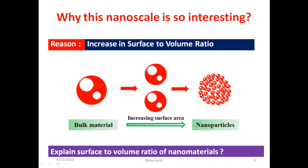In the bulk material, more atoms are inside compared to atoms on the surface, so it is less reactive. But when its size is reduced by breaking it, atoms inside come out, and the surface area of each particle compared to its volume increases. When very finely powdered to nanoscale, almost all atoms are on the surface, so the surface area compared to the volume of each particle is very high. As we reduce the size to nanoscale, particles gain maximum surface area compared to their volume.